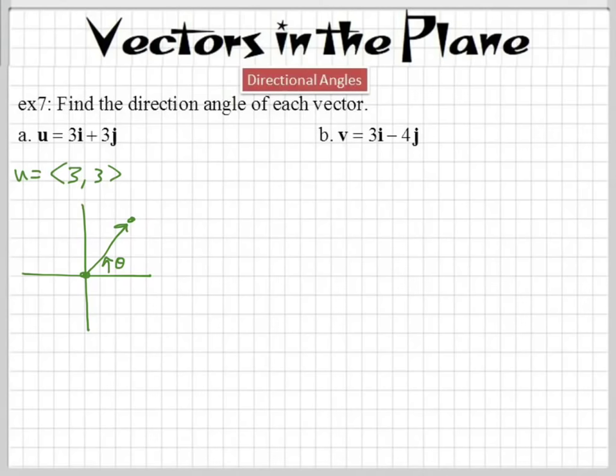How do we find that angle? You guys know that if we had a triangle right here, and we knew that this was 3 and this was 3, you guys can find the angle by using which function? Which trig function? If you have the opposite and the adjacent, which trig function would you use? Yes, tangent.